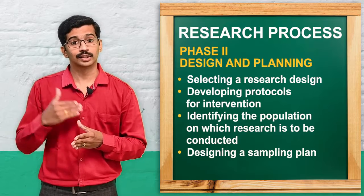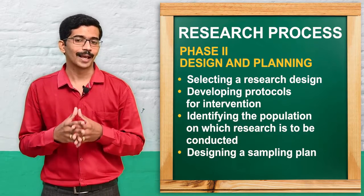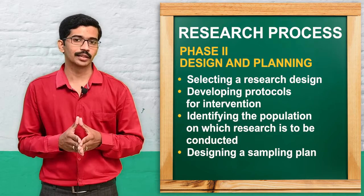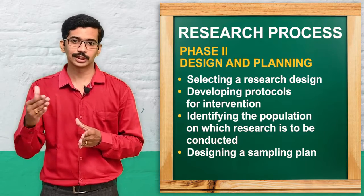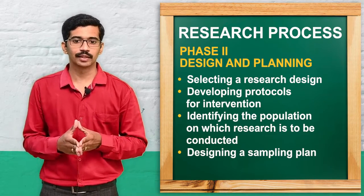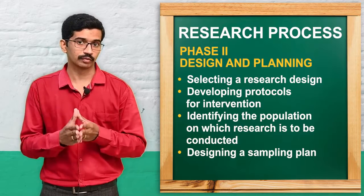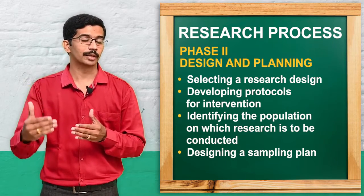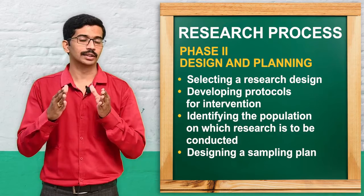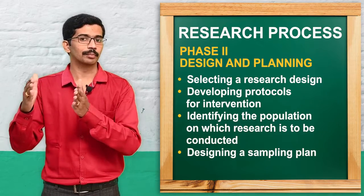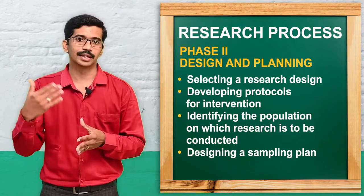The next step is developing an intervention protocol, which is mainly followed in experimental studies. In experimental research, we need modification of certain variables — what we call an intervention. After that comes designing the sampling plan. The total population is identified, for example ICU nurses or school teachers, and from that total population we select the group for our research. That is the sampling plan.